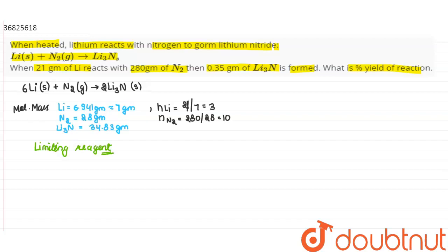And for lithium nitride, the actual moles formed = 0.35 divided by 34.83 = approximately 0.01 moles.